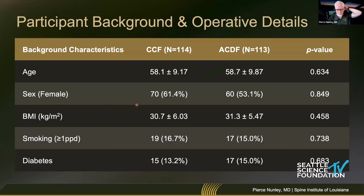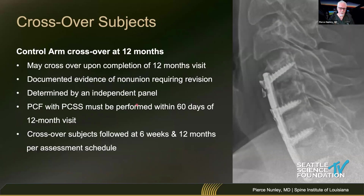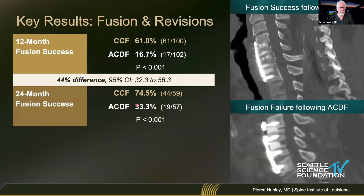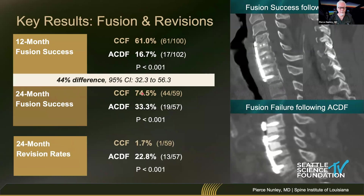Background characteristics were similar between the two groups. Crossovers were allowed at 12 months and had to be performed within 60 days. Looking at the fusion rate results — this is where it gets interesting. Circumferential at 12 months was 61 percent whereas ACDF alone was 16.7 percent. Before you start screaming, yes, that did improve to 33 percent versus 74 percent at 24 months — still a huge difference. But where the rubber meets the road: revision rates at 24 months were 1.7 percent — one out of 59 patients — with circumferential versus 13 out of 57 for ACDF alone. That's huge. Think of your practice, think how many of these you do a year, and think how many more revisions you'll have to do. This is one of the most telling statistics from this data.